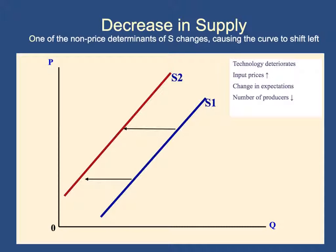For example, if you think that in the future everyone is going to demand your product, you're going to be willing to supply less output at every price level right now — because instead of supplying it now, you'd rather supply it in the future — shifting the supply curve to the left. Also, if the number of producers leaves the market, the market will produce less output at every price level, because two producers naturally produce way more output than one producer.